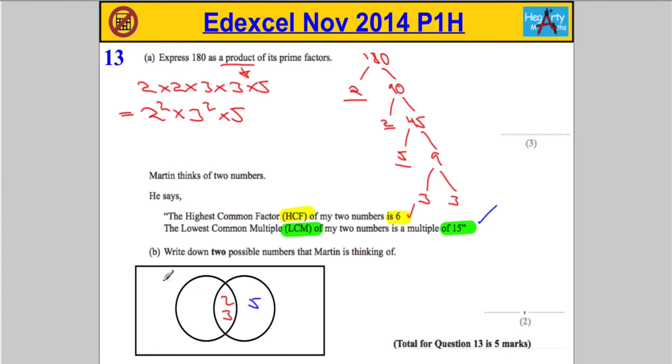So, let's see. What would our two numbers be? Let's say one of the numbers must be 6. From these two, 2 times 3 is 6. And then the other number must be 2 times 3 times 5, which is 30.